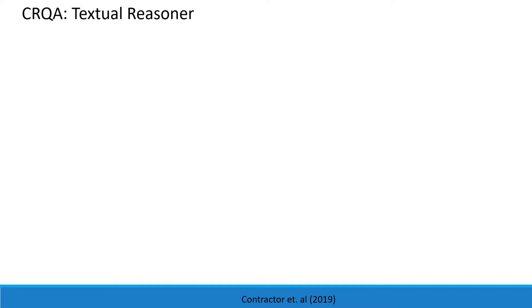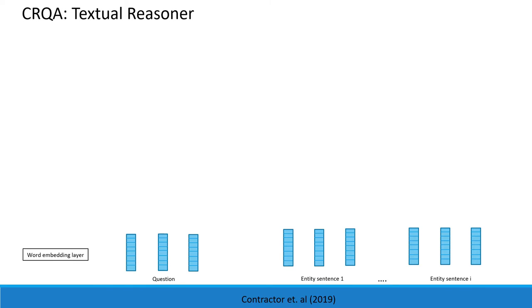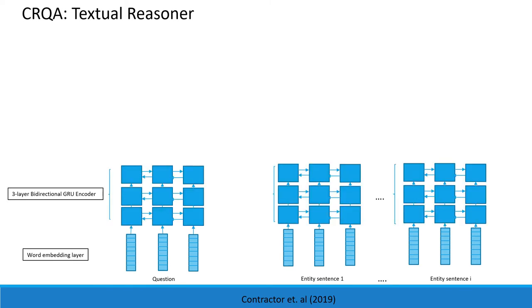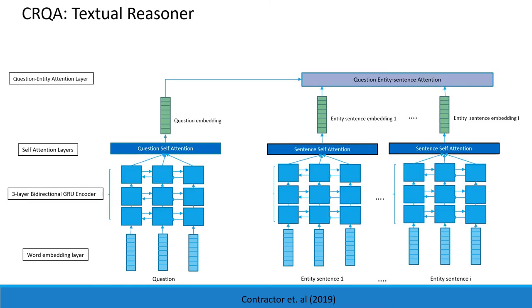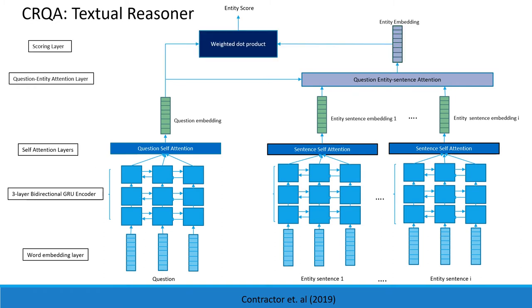As mentioned previously, answering such questions also requires reasoning over text. We use an existing model for this task called CRQA. Given a question and an entity document consisting of sentences from reviews, we encode them using bidirectional GRUs and self-attend to generate representations for the question and each sentence in the entity document. We then use question-entity attention to generate a question-aware entity embedding, which is used in a weighted dot product to return a textual relevance score.